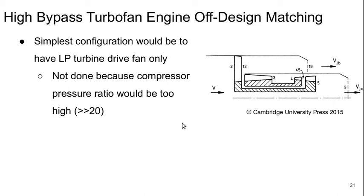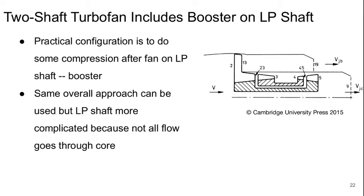Now, we can conceptually use the same approach to look at what's happening with our high-bypass ratio turbofan engines in terms of off-design matching. The simplest configuration for a turbofan engine would be to basically have the low-pressure turbine only drive the fan. That would make the analysis infinitely easier. Unfortunately, it's not what's ever done because the compressor pressure ratio would be too high. It would be much greater than 20, and we wouldn't be able to have significant stability or off-design performance.